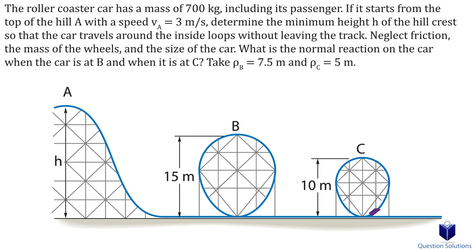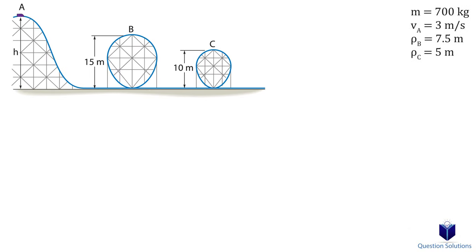Let's take a look at this roller coaster problem. We need to find the minimum height of the initial hill so that the roller coaster makes it through all the other loops. We also need to find the normal force on the car when it's at points B and C. What we will do first is figure out the minimum velocity required for the car to make it through loops B and C, and then use those values to figure out the height required.